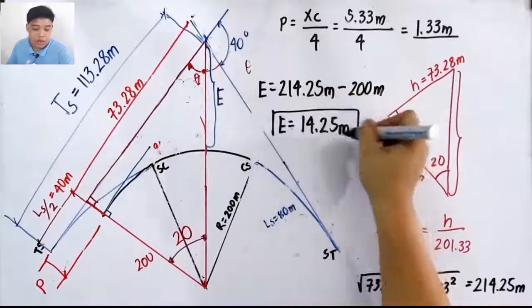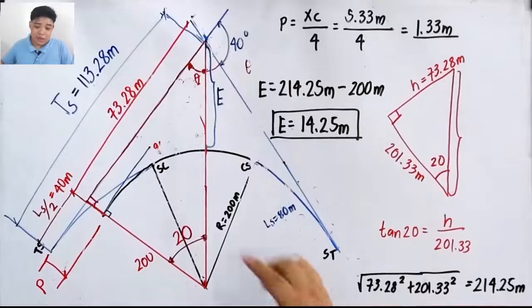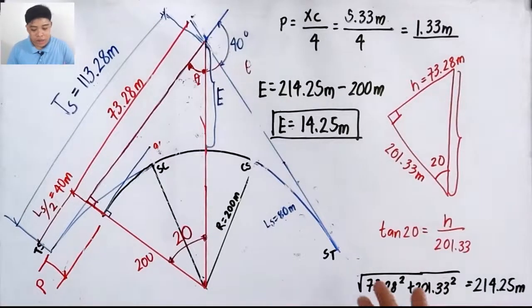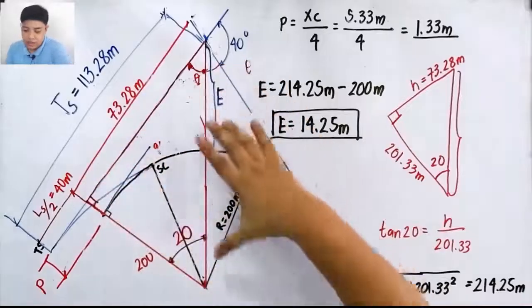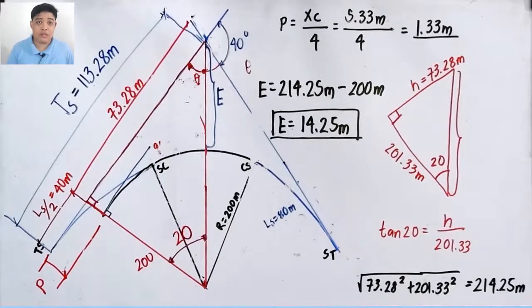You don't need to memorize many formulas. For basic dimensions in spiral curves, watch the previous video for the foundational steps. For the length of throw, external distance, and tangent distance, all you need is basic trigonometry. Just understand how the geometry of the spiral works. Thank you and I hope you learned a lot.